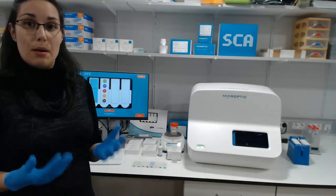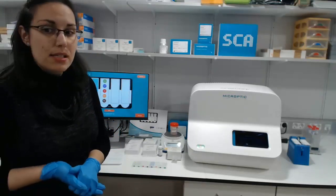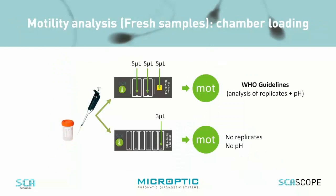Once we have filled all the macroscopic information, we can proceed to sample preparation. We can use two types of counting chambers. If we are following the WHO guidelines, we will use a type of counting chamber that contains two chambers with a depth of 10 microns and a pH strip in one corner to evaluate the pH. This is important for doing replicates, so for accredited laboratories we recommend using this type of counting chamber.